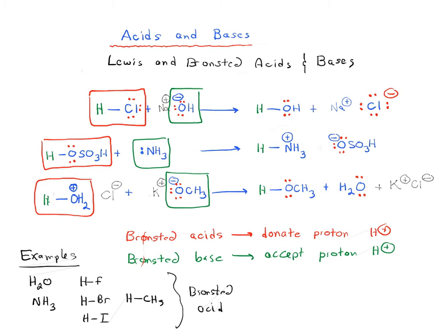And similarly, anything which has a lone pair can act as a Bronsted base. So for example, water can act as a Bronsted base. And so can CH3-. And so can Cl-. And so can so many other species. We can draw an infinite number of different types of Bronsted bases.